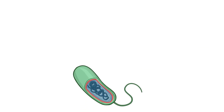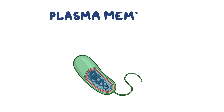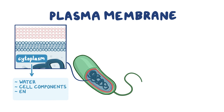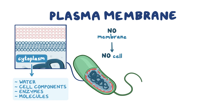Underneath the bacterial cell wall, there's the plasma membrane, which is the most important layer because it encloses the cytoplasm — a gel-like substance composed mainly of water that also contains cell components, enzymes, and various organic molecules. If the plasma membrane is removed, the cell's contents spill into the environment and the cell no longer exists.